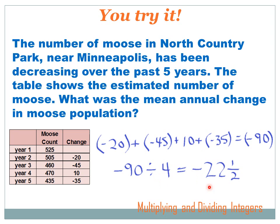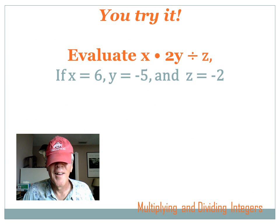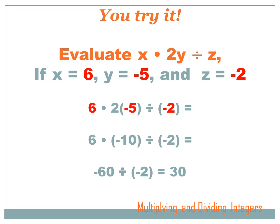Evaluate the expression x times 2y divided by z, where x equals 6, y equals -5, and z equals -2. Okay, well they tell us that x equals 6, y equals -5, and z equals -2. So we have to substitute into the equation. We have to substitute 6 where x was, and where y was we have to substitute -5, and where z is we have to substitute -2. So the equation becomes 6 times 2 times -5 divided by -2.